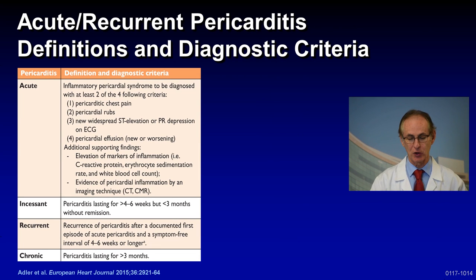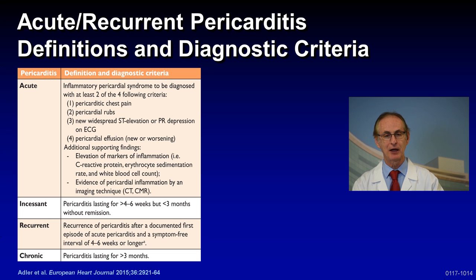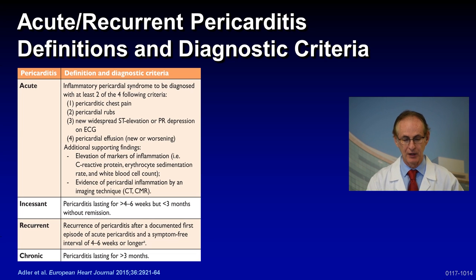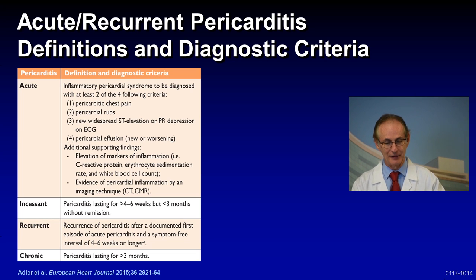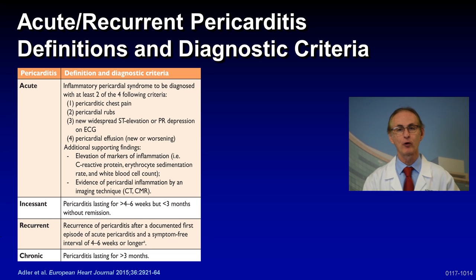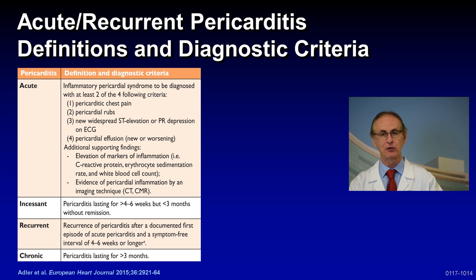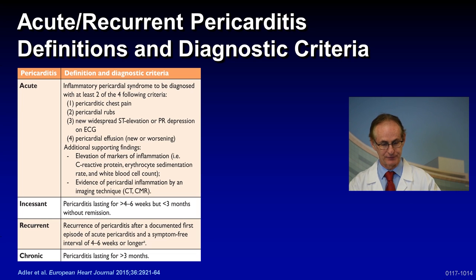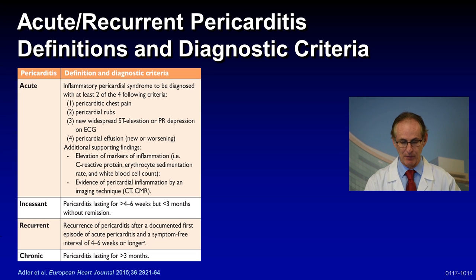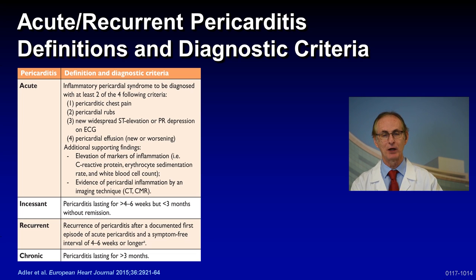Let's review the current definitions from the European guidelines for diagnosing acute and recurrent pericarditis. For acute pericarditis, as of 2016, you need two of four clinical criteria: classic pleuritic chest pain, a pericardial rub, abnormal EKG including ST elevation or PR depression, or a new or worsening pericardial effusion. Additional supporting findings include markers of inflammation — CRP, ultra-sensitive CRP, sed rate, or white count — or an MRI. But again, two of four criteria are required.